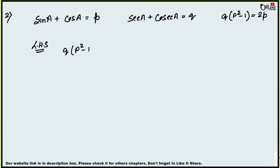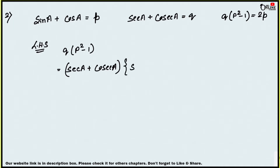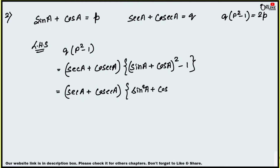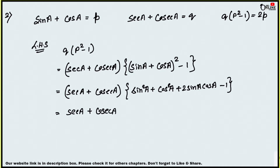The LHS is q(p² - 1). The value of q is sec a + cosec a, and p² means (sin a + cos a)² minus 1. Expanding (sin a + cos a)² using the (a + b)² formula gives sin²a + cos²a + 2 sin a cos a. So we have sec a + cosec a times (sin²a + cos²a + 2 sin a cos a - 1).